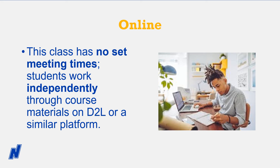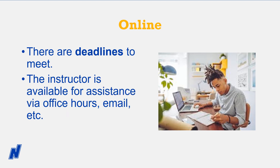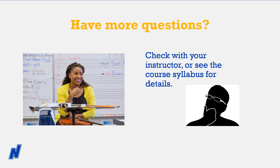Online courses have no set meeting times. Instead, students work independently through course materials and activities posted on the learning management system or a similar platform. There are deadlines to meet, such as when to complete activities and assignments, and like any class type, the instructor is available for assistance through office hours and emails. It's always a good idea, whenever you have questions, to ask your instructor and look over the course syllabus.